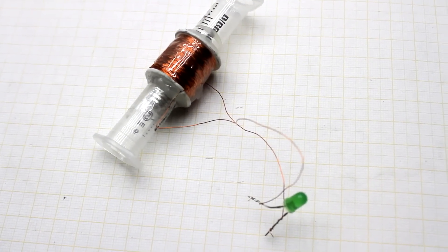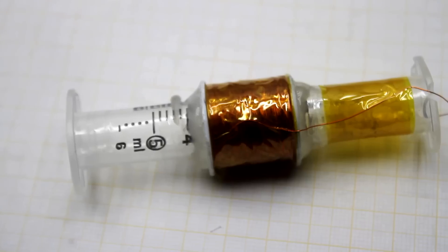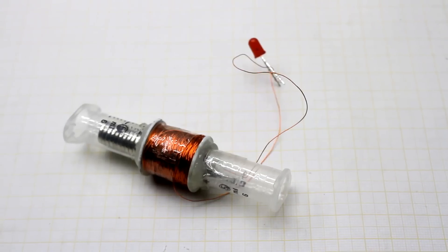Now the generator is ready. The winding can be fixed with an adhesive tape. Let's begin assembling the converter.